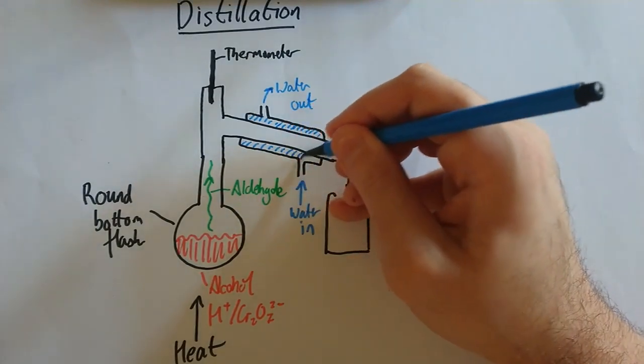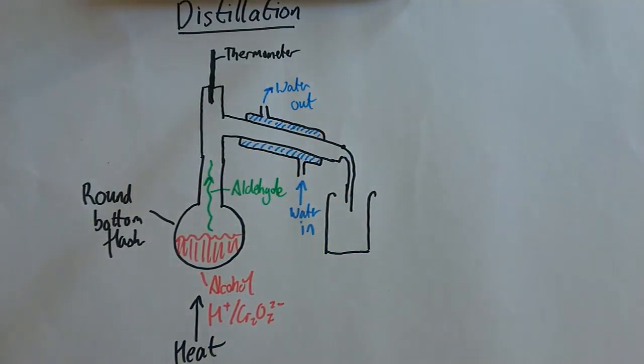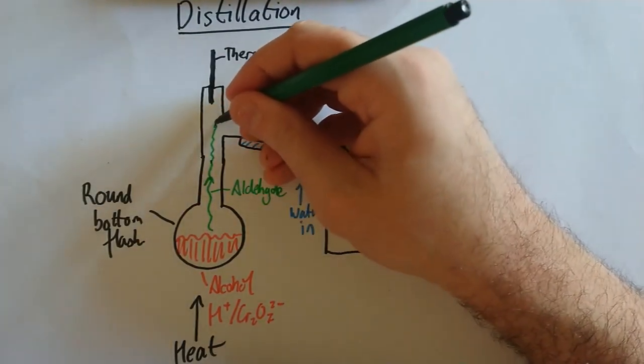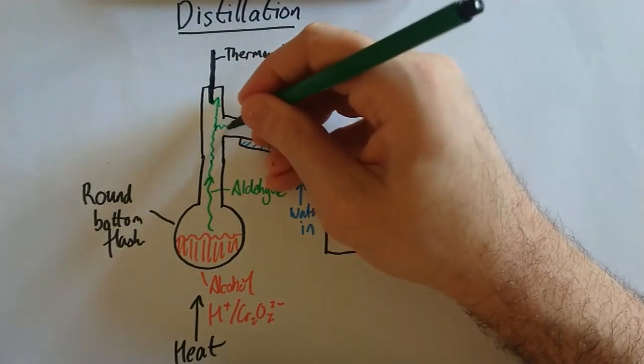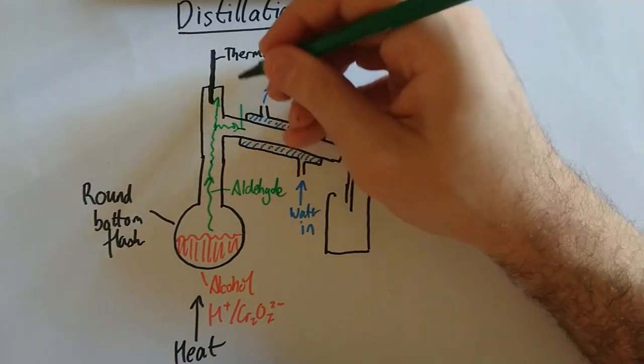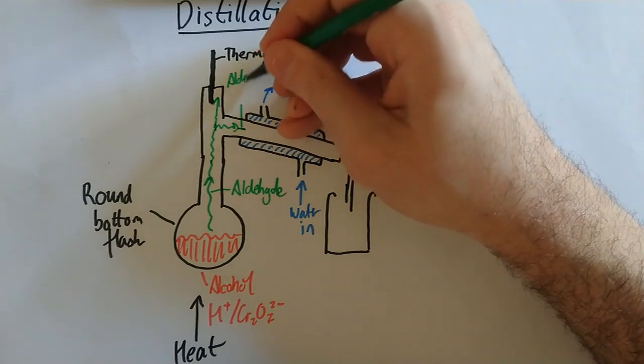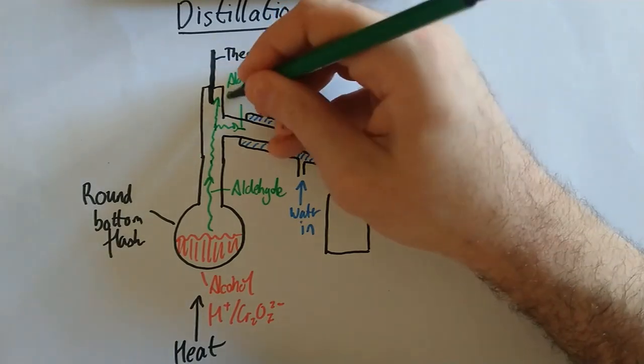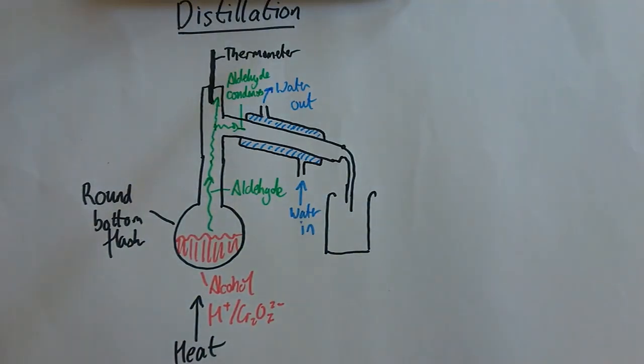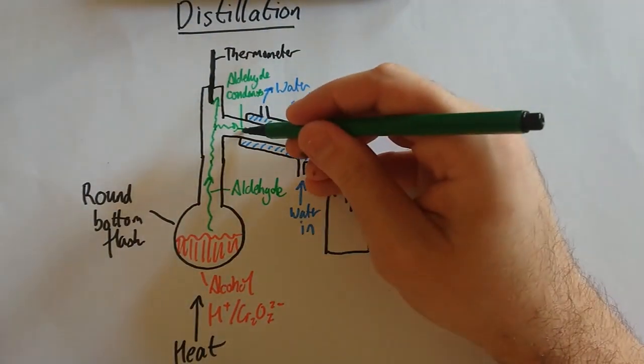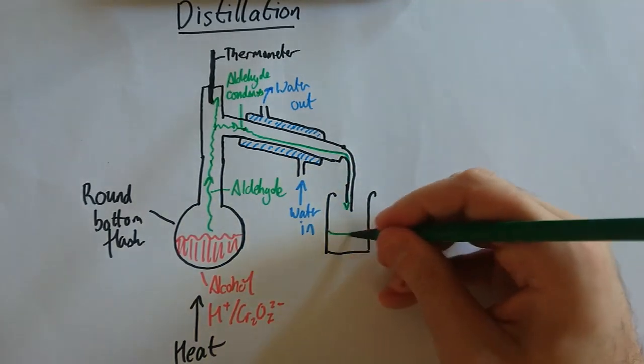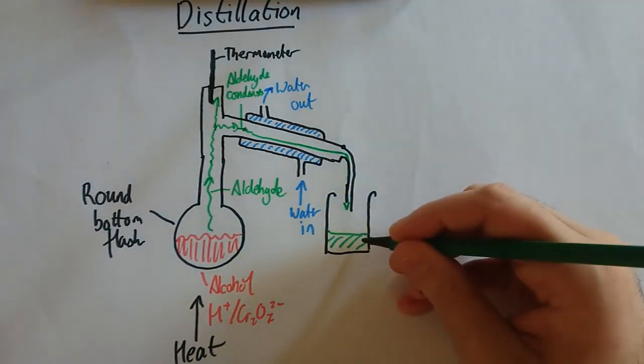We've all been there. So your aldehyde keeps going up here, some of it will go down here. When it goes here it condenses, so now the aldehyde's a liquid. It will just roll down here through the tube and be collected nicely in here.